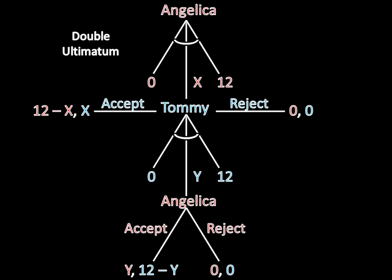And this is our somewhat daunting extensive form. Just to be clear, Angelica begins the game by offering Tommy X cookies. Tommy can accept that offer, reject that offer and end the game, or propose a counteroffer. If Tommy proposes a counteroffer, Angelica can either accept it or reject it.